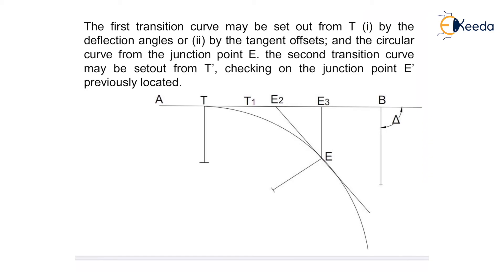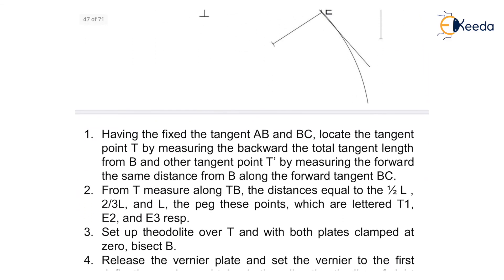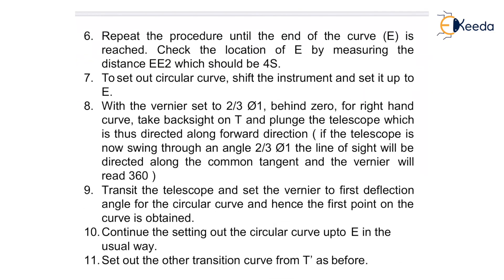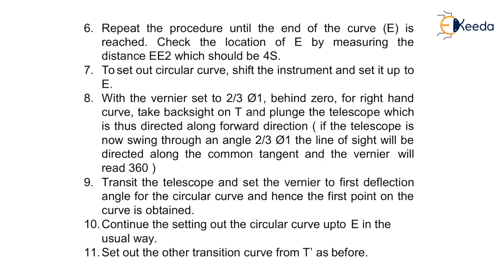Pin down the zero end of the tape at T and holding the arrow at the distance on the chain equal to the length of the first chord, swing the chain around T until the arrow is bisected by the crosshairs. In the same way, fix the second and third transition points. Then set out the other transition curve from T' in the same way. In this video we discussed about the elements of combined curve and the procedure to set out combined curve by using the deflection angle method. Thank you.